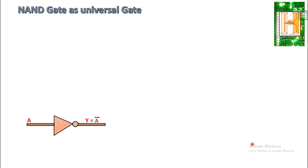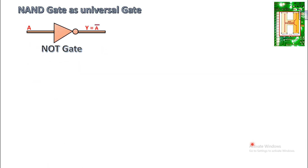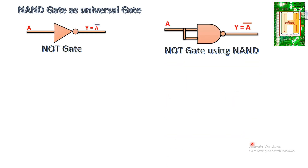Let us look at NAND as a universal gate. First, implementing NOT using NAND: the NOT gate has a single input A with output equal to complement of A. To implement this with a NAND gate, both inputs of the NAND gate are shortened to A, so the AND output is A, and the NOT gives Y equal to A complement. Comparing the outputs of the NOT gate and the NOT-using-NAND, both are the same, hence we can implement a NOT gate using a NAND gate.